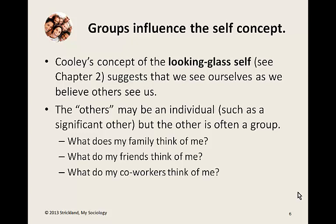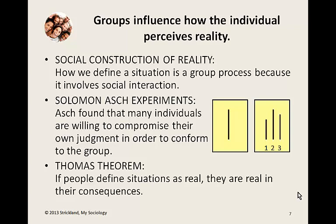Groups also influence the self-concept — how we feel about ourselves, what we think about ourselves, what kind of person we think we are. In a previous chapter, we studied the looking-glass self, a concept from the work of Charles Horton Cooley. Cooley suggested that we see ourselves as we believe others see us. So our self-image is connected to others — maybe a significant other, but in many cases the other in the looking-glass self is a group or even all of society. If I think about what kind of person I am, I often think: what does my family think of me, what do my friends think of me, what do my co-workers think of me? So the looking-glass self shows us that groups influence the self-concept.